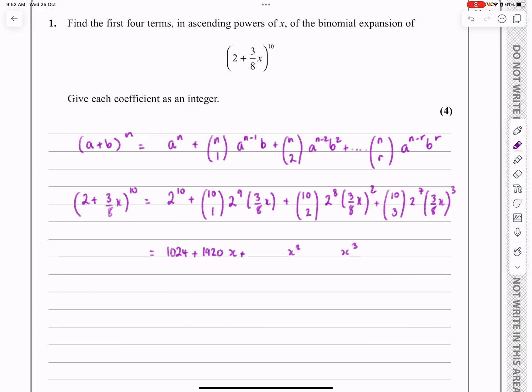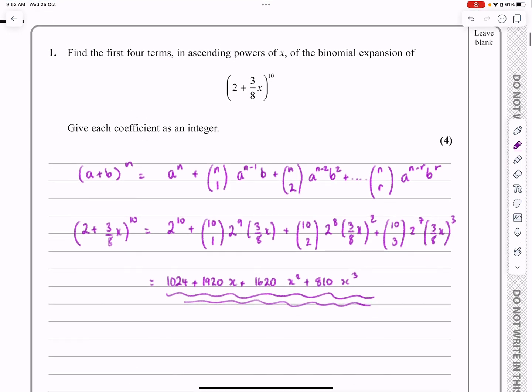Plus 10C2 times 2 to the 8 times 3/8 squared. Make sure you practice these so that we're not making silly mistakes going through, just filling out the various different values here. And as long as you've done a little bit of practice, these should be relatively straightforward. Nothing complicated about this one, so that's all we need to do for that.